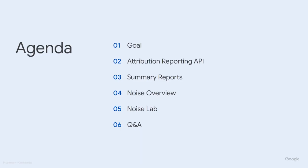In this deep dive, we'll start by establishing what the goals and outcomes are, then we'll do a quick overview of the Attribution Reporting API, followed by a look at how summary reports work, and then a quick overview of noise and the various parameters that can change the impact of noise. And then finally, we will jump into NoiseLab and walk through the various functionality that it provides, and go through a couple of real scenarios so you can see the different types of experiments you can run in NoiseLab.